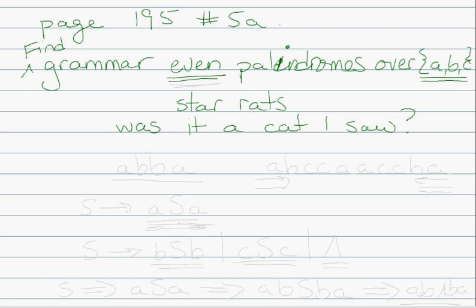So we're talking about things like A, B, B, A, or A, B, C, C, B, A — and then let's mirror that: A, C, C, B, A. So if we start at the beginning and at the end, they read the same.